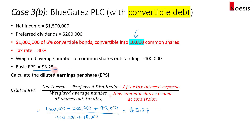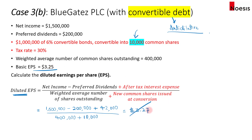Notice that the diluted EPS of $3.27 is actually greater than the basic EPS of $3.25. This doesn't work because diluted EPS must show the dilutive nature of the security — we can't show diluted EPS higher than basic EPS. In this case, the convertible debt is what we call anti-dilutive. We therefore set the diluted EPS equal to the basic EPS of $3.25. The basic EPS acts as a ceiling.